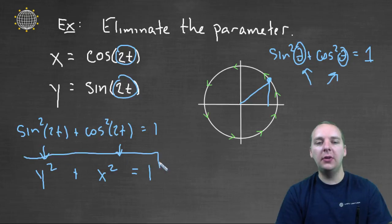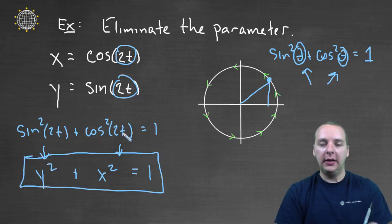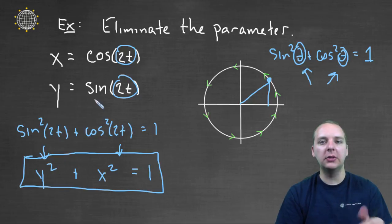And so just every so often you'll see this type of eliminate the parameter procedure. And like I said, it usually happens with trig functions because you're relying on this Pythagorean identity for trig functions. But it's a tool that we have that we can use to eliminate the parameter.